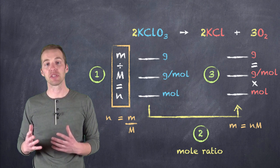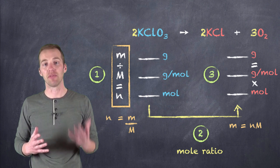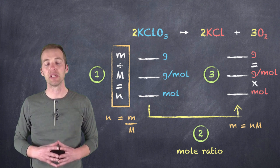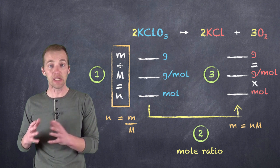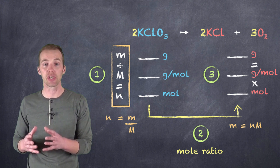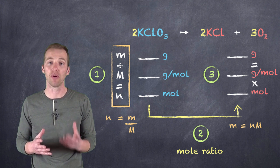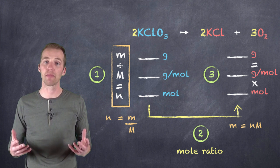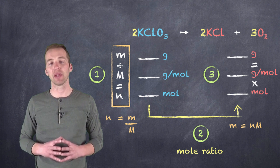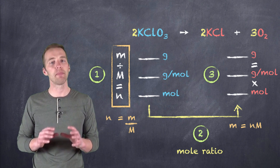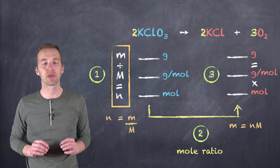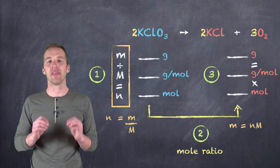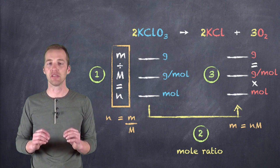Notice the way that I've set it up: we divide moving down, we multiply going up, and this equals the relationship of calculating mass using the mole — mass equals the number of moles times molar mass. If you follow this game plan, it's going to make those stoichiometric calculations, especially when you're first starting out, that much easier.